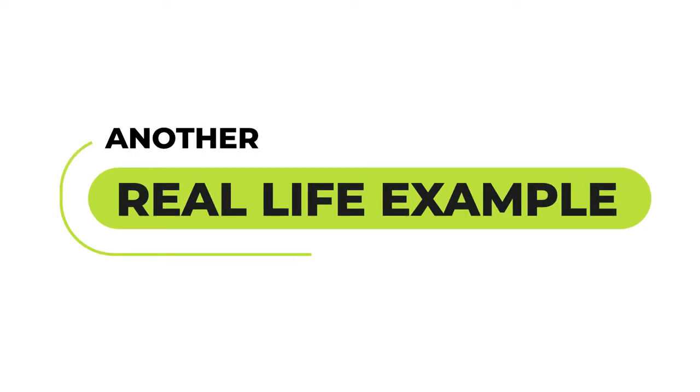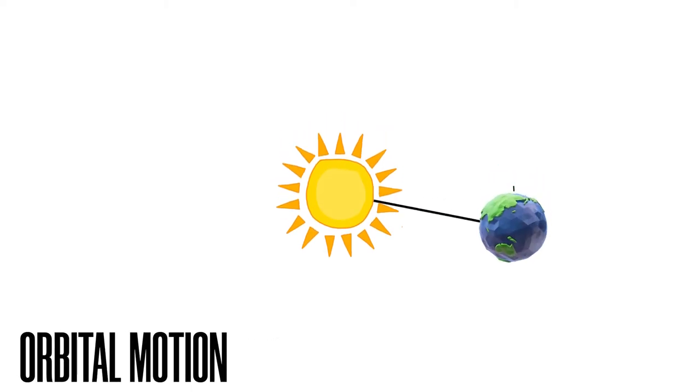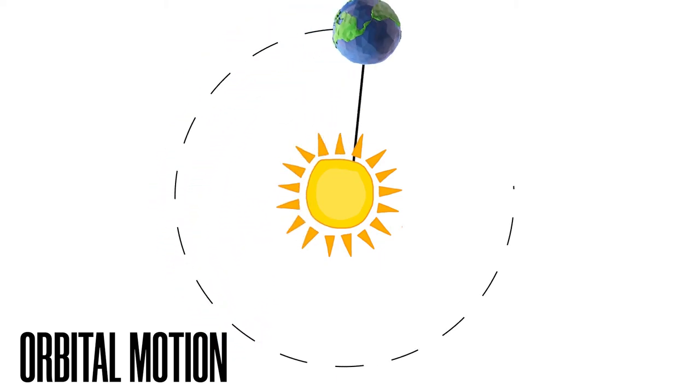Now here's another real life example in front of us. You can see that Earth revolves around the sun in an orbital motion, so orbital motion is also a type of angular momentum.